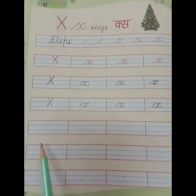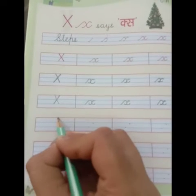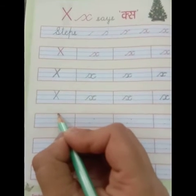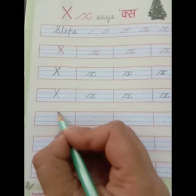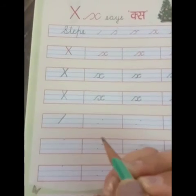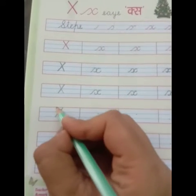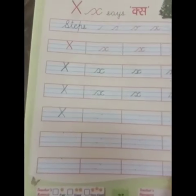So firstly we will write capital letter X. Start with first line, red line, then come down till third line in a slanting way like this. And then from here again you will come down like this. X.